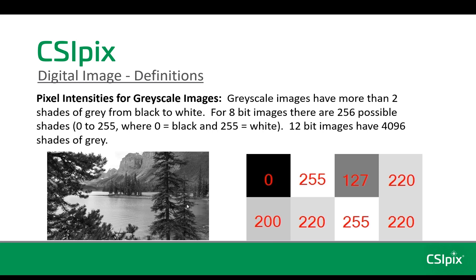Pixel intensities for grayscale images: grayscale images have more than two shades of grey from black to white. For 8-bit grayscale images, which is the most common form, there are 256 possible shades of grey, 0 to 255, where 0 is black and 255 is white. 12-bit images have 4096 shades of grey. So this is a grayscale image, and here are some pixels with the intensities shown. Black is 0, white is 255, and the middle grey is 127.